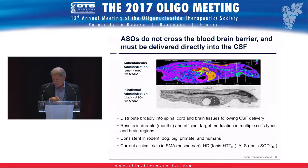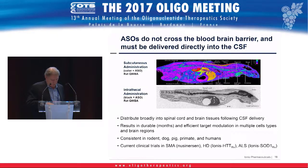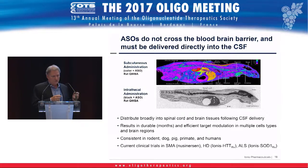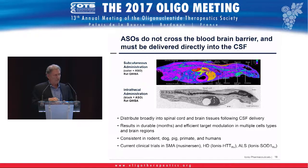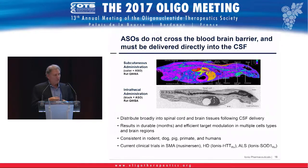What about the brain? The top slide shows broad systemic distribution following subcutaneous administration, but nothing in the brain — these drugs don't cross the blood-brain barrier. However, if you introduce them intrathecally, as shown in the lower panel, distribution throughout the CNS is quite high. Some drug also spills out systemically, seen in autoradiography of the liver, but the doses required for CNS activity are much lower than those needed for systemic tissues.